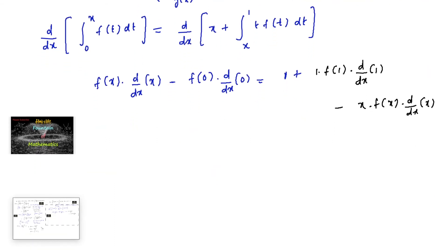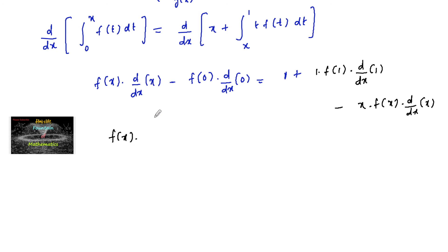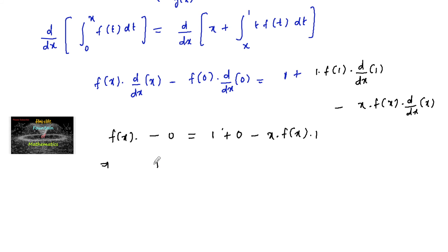So we have f(x)·1 minus 0 equals 1 plus 0 minus x·f(x)·1. This gives f(x) equals 1 minus x·f(x), or f(x) plus x·f(x) equals 1.